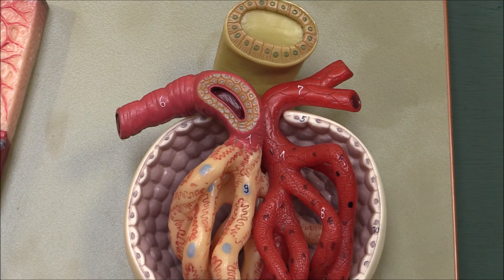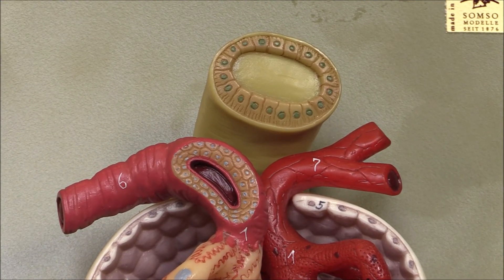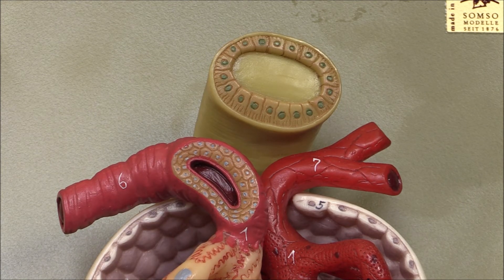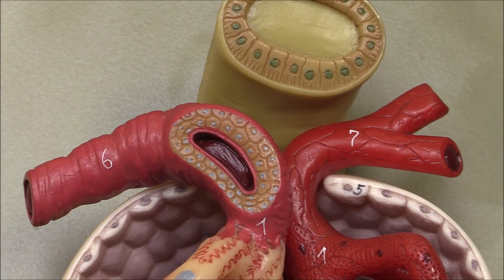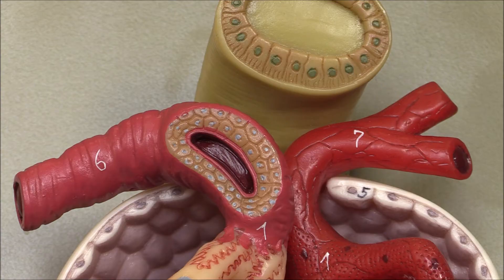I want to spend a little bit of time on this fascinating structure — the juxtaglomerular apparatus. These cells in the wall and extending out from the wall of the afferent arteriole are modified smooth muscle cells, and these are the juxtaglomerular cells. They're sometimes called granular cells because they appear granular.